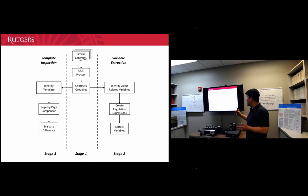So we begin by grouping contracts that are generated from the same template. Then, once we have those groups, we will extract variables from this group of contracts and also inspect whether there's any alteration in the template.